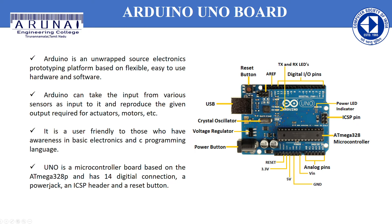Arduino Uno board: It is an open-source electronics platform based on easy-to-use hardware and software. Arduino boards are able to read inputs — a light on a sensor, a finger on a button, or a Twitter message — and turn it into an output like activating a motor, turning on an LED, or publishing something online. You can tell your board what to do by sending a set of instructions to the microcontroller on the board using the Arduino programming language and software based on Processing. Over the years, Arduino has been the brain of thousands of projects from everyday objects to complex scientific instruments. It is inexpensive, open source, and cross-platform.